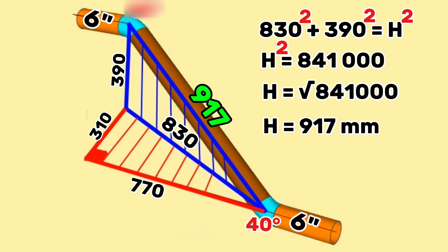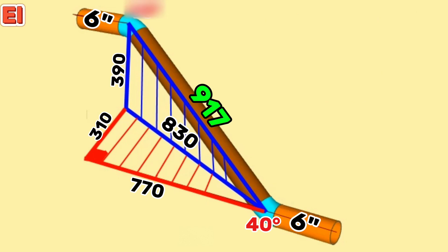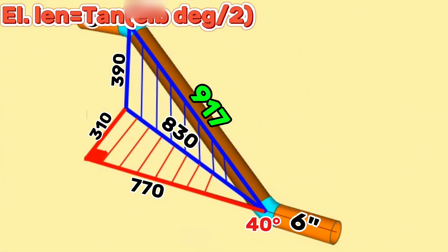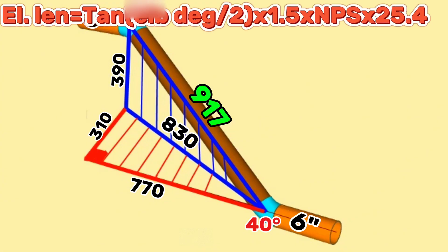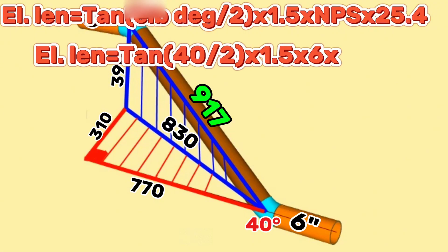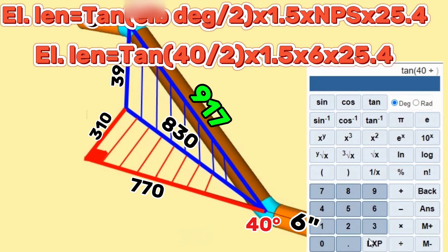Now let's calculate the 40 degree cut elbow lengths. The formula for calculating center-to-end distance of such cut elbows is: elbow length equals tangent of (elbow degree divided by 2), multiplied by 1.5, multiplied by nominal pipe size (NPS), multiplied by 25.4. For a 6 inch 40 degree butt weld elbow: tangent(40/2) × 1.5 × 6 × 25.4. Using a scientific calculator, the 6 inch 40 degree butt weld elbow center-to-end dimension equals 83 millimeters.